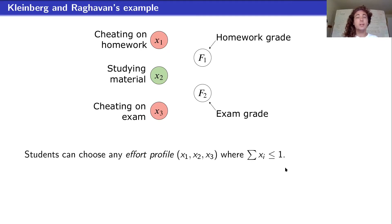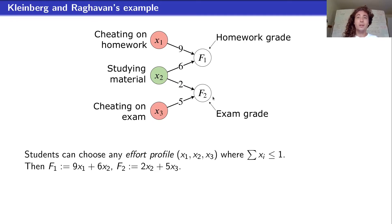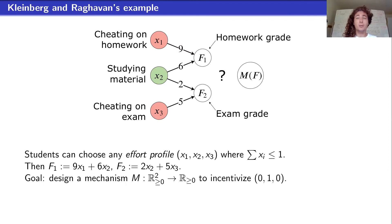For this instance, suppose this is how effort converts for the students. For example, feature F1, the homework grade, equals nine times the time spent cheating on homework plus six times the time spent studying the material. You can see that studying helps both features while cheating only helps one. So the professor is trying to come up with a mechanism that takes feature values F1 and F2 as input to incentivize all agents to choose the profile (0,1,0), investing all effort into x2, the one admissible action.